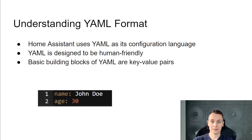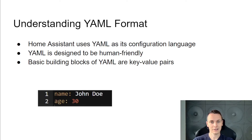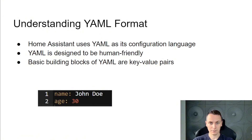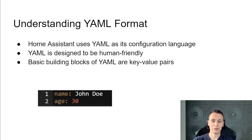Home Assistant uses YAML as its main configuration language. It's designed to be human-friendly and quite easy to be picked up by beginners. The basic building blocks of YAML are key-value pairs. You specify the key, then a colon and the value.